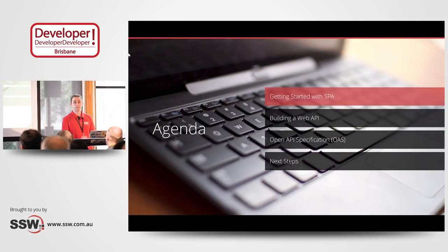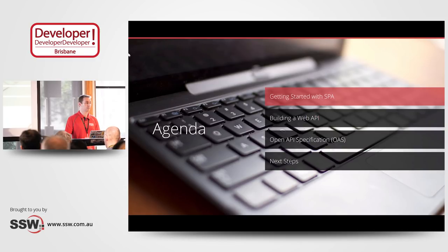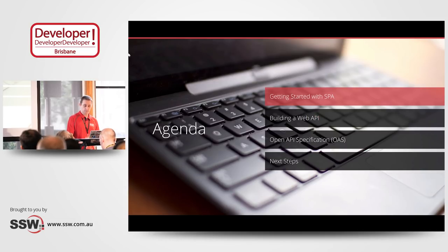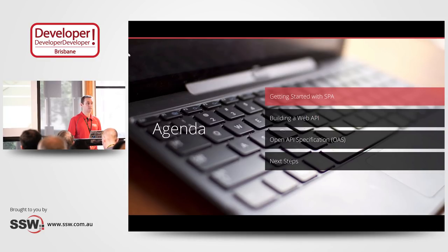I'm going to cover three main topics. First, we're going to cover getting started with SPAs — how to get your tooling set up and create your first project, including the features included with this approach. Then we're going to look at building a Web API, with tips and tricks to take it from a typical Web API to something more advanced and easier to work with. And finally, we're going to talk about the OpenAPI specification.